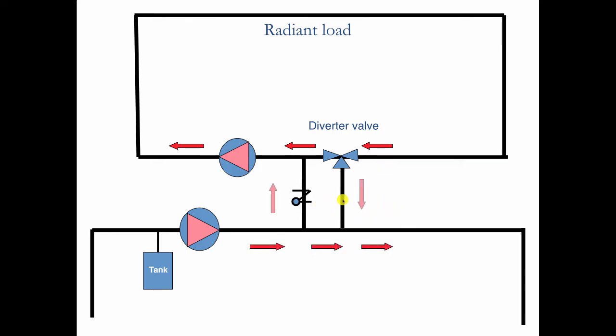But now look, this is the flow. I've reversed this check valve. So now when the diverter valve moves its position, the hot water will come here. And by doing this, when this port closes, I still have access, pressure-wise, to the compression tank, so this will not cavitate.